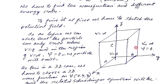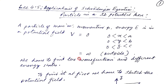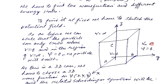This is a box-like structure where x goes from 0 to a, y goes from 0 to b, and z goes from 0 to c, and v equals to infinity outside. So outside the boundaries, the potential is infinitely large, and inside this box-like structure, the potential v equals to 0.